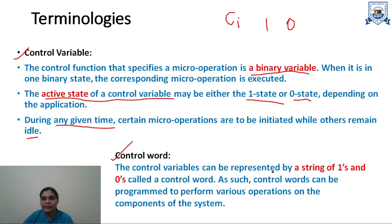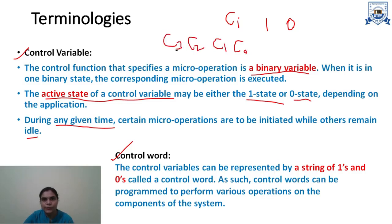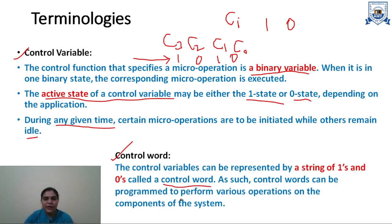A control word is a string of ones and zeros that represents a combination of control variables. For example, if we have four control signals C0, C1, C2, and C3, their combined binary string forms a control word. Such control words can be programmed to perform various operations on the components of a system.